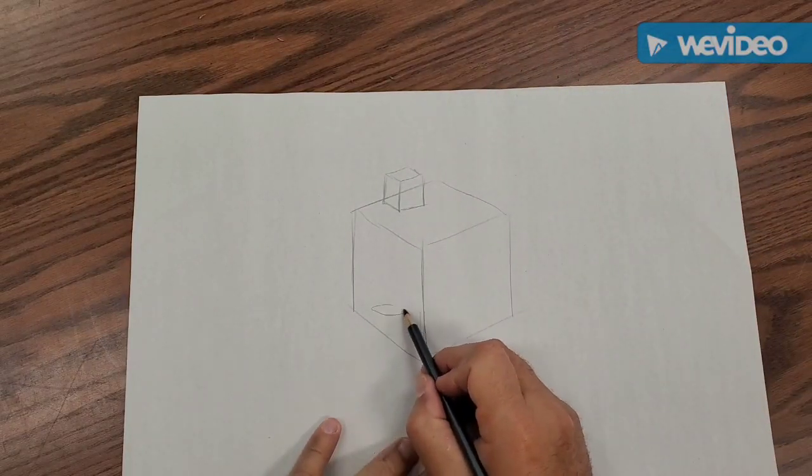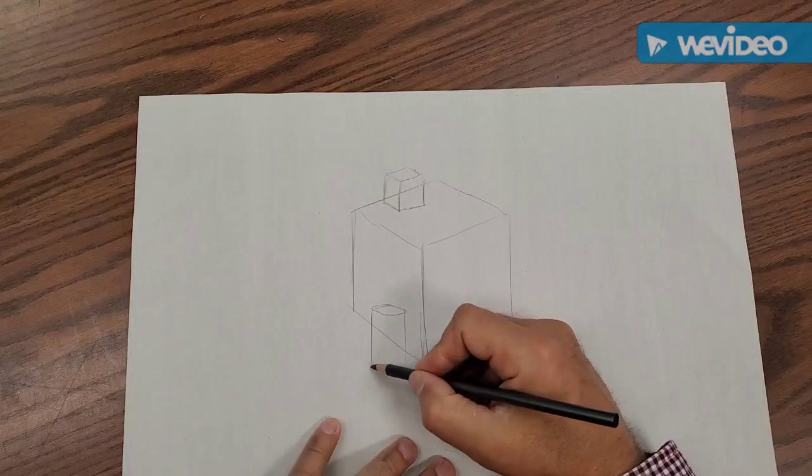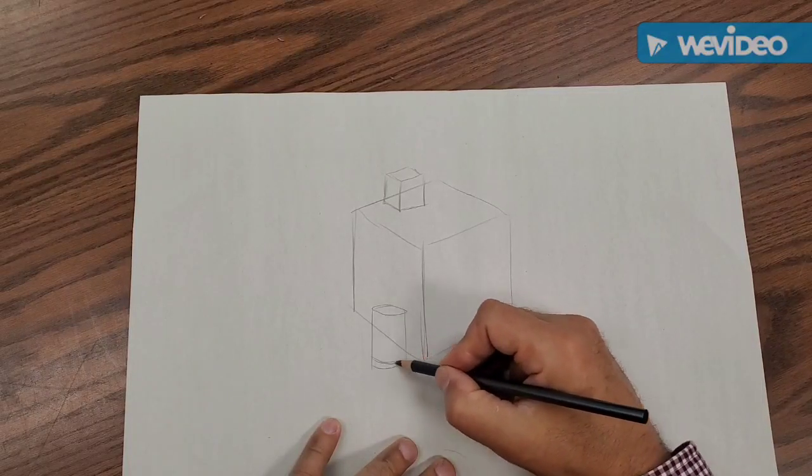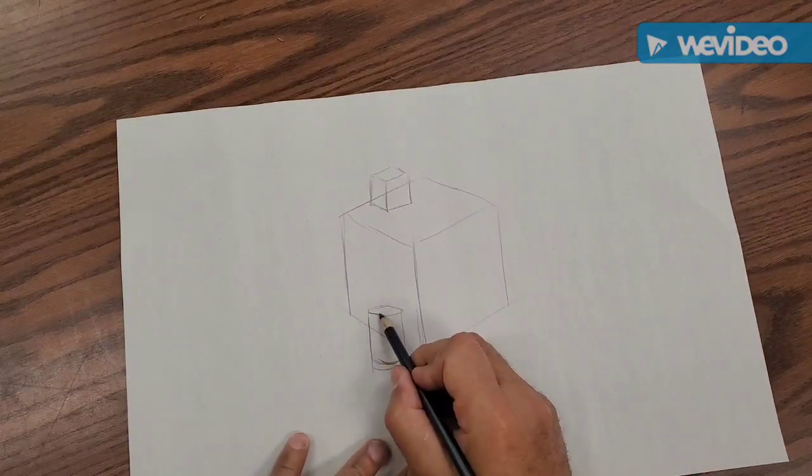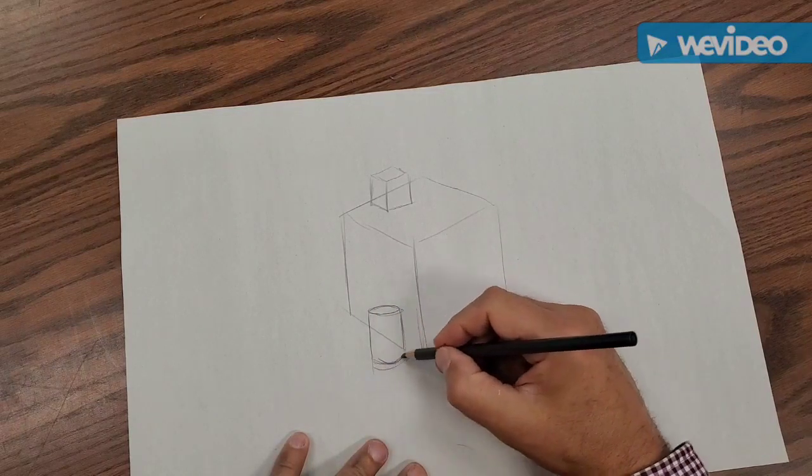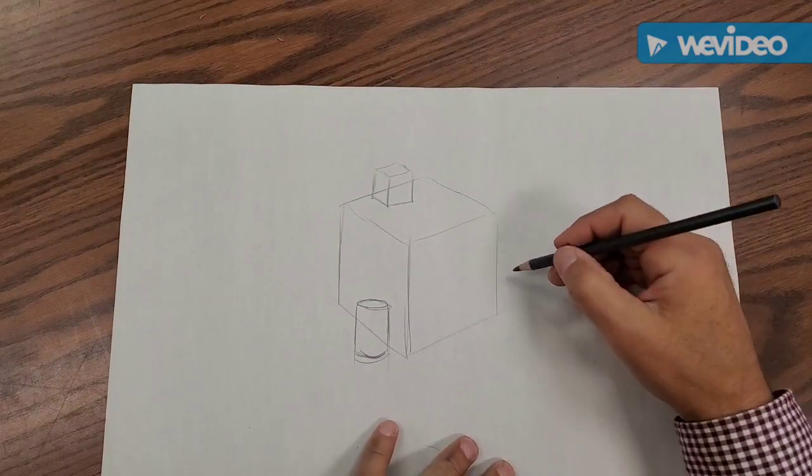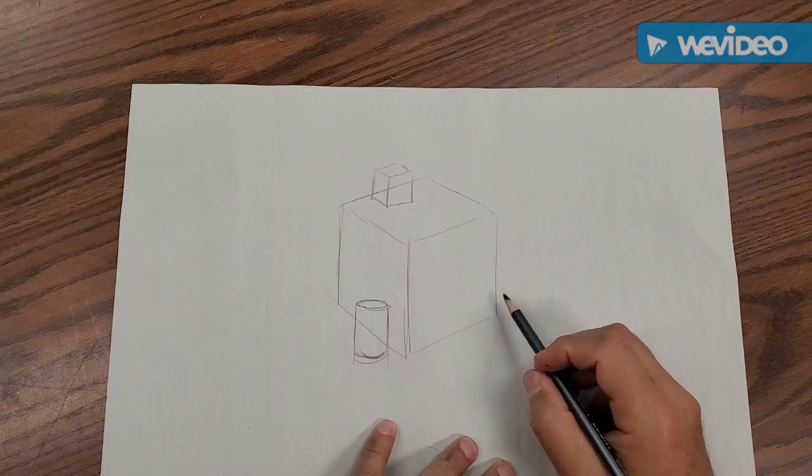And then I've got a cylinder that's down here like this. I'll draw that cylinder. It's not a real tall cylinder. It's kind of short. I'm doing kind of a foundation sketch first. In other words, I'm just kind of sketching the objects in, and then I will clean them up later.